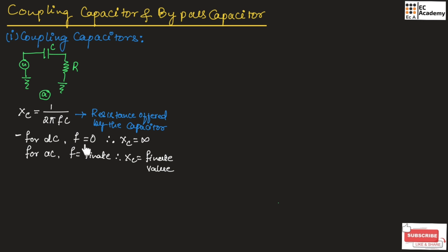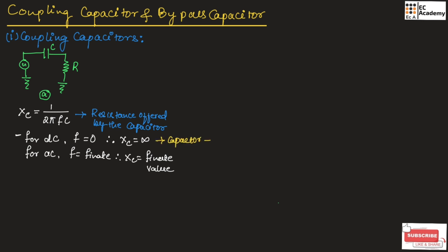For a DC signal, frequency is 0, that is why the reactance will be equal to infinity, which means the resistance offered by the capacitor will be infinite for a DC signal. For an AC signal, frequency is a finite value, that is why the reactance will also be a finite value. Therefore, for a DC signal the capacitor acts as an open circuit, and for an AC signal the capacitor acts as a closed circuit or closed path.